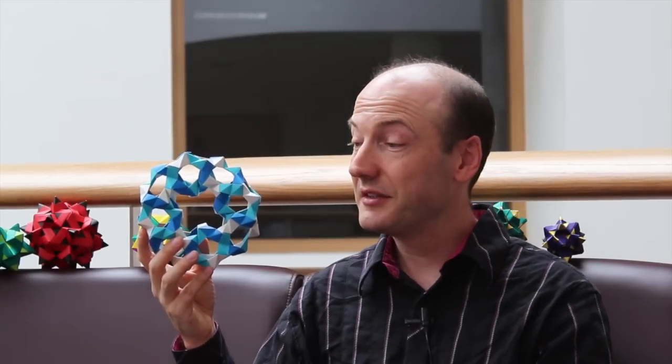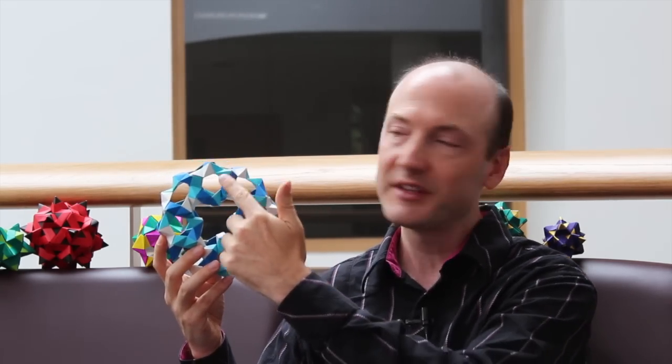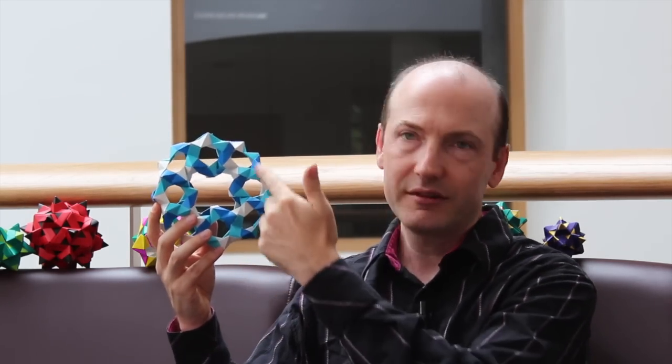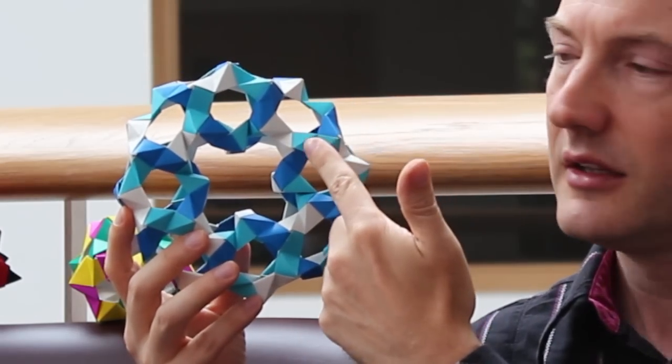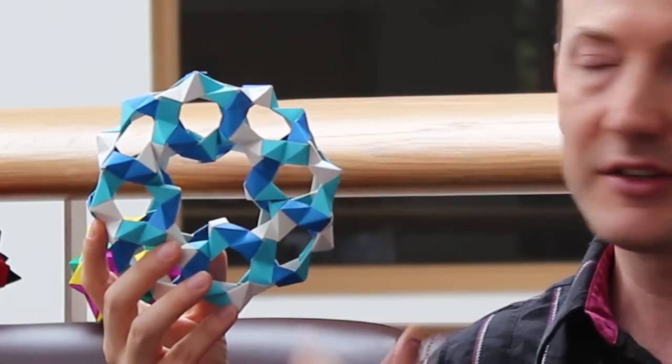There's lots of questions you can ask. This type of coloring is called a proper three-edge coloring. I'm coloring the edges of this structure so that no two pieces of paper of the same color touch.